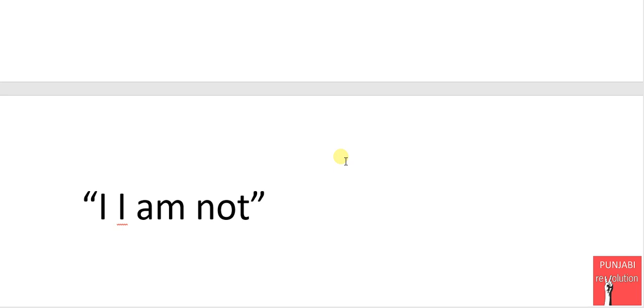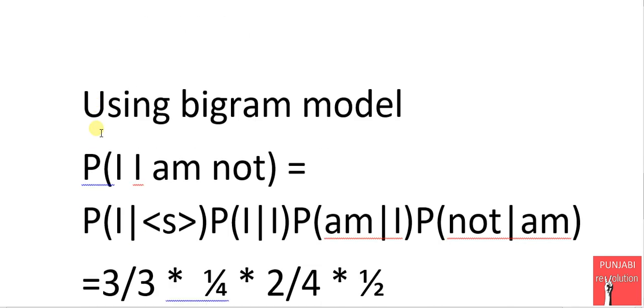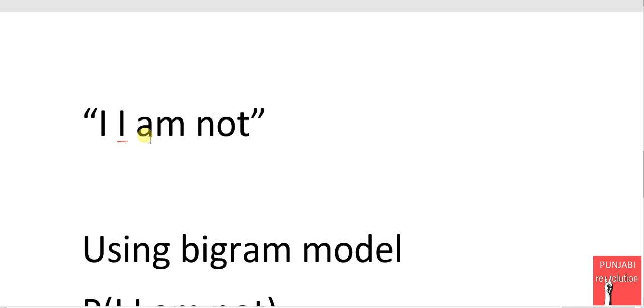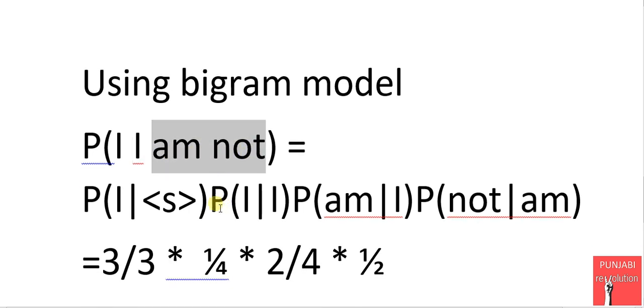So let's start. By applying the bigram model that we derived in the previous lecture, we can say that probability of the sentence 'I am not' will be equal to the probability of I given <s>, that is the start of the sentence, probability of I given I, probability of am given I, probability of not given am. By using the bigram model, we will get the probability of the sentence.